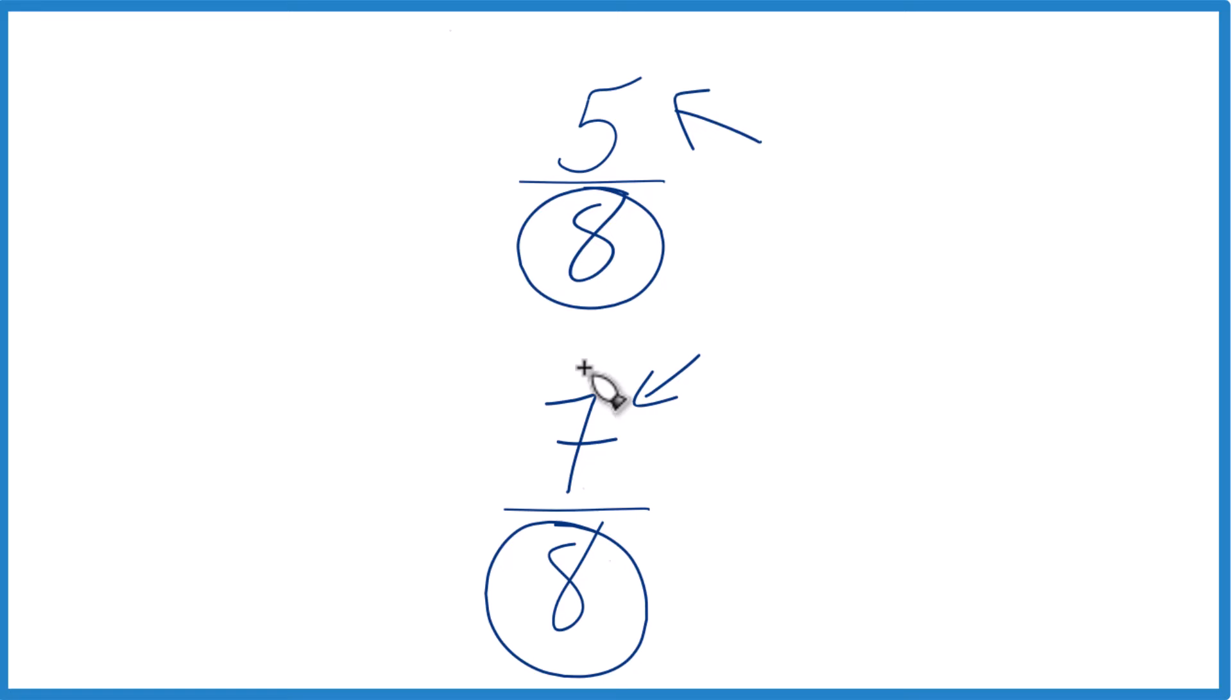7 greater than 5, so 7 eighths is greater than 5 eighths. And you can check this too. You can take 5 and divide it by 8 on a calculator, 7 divided by 8 on a calculator, and you'd see 7 eighths is larger than 5 eighths.